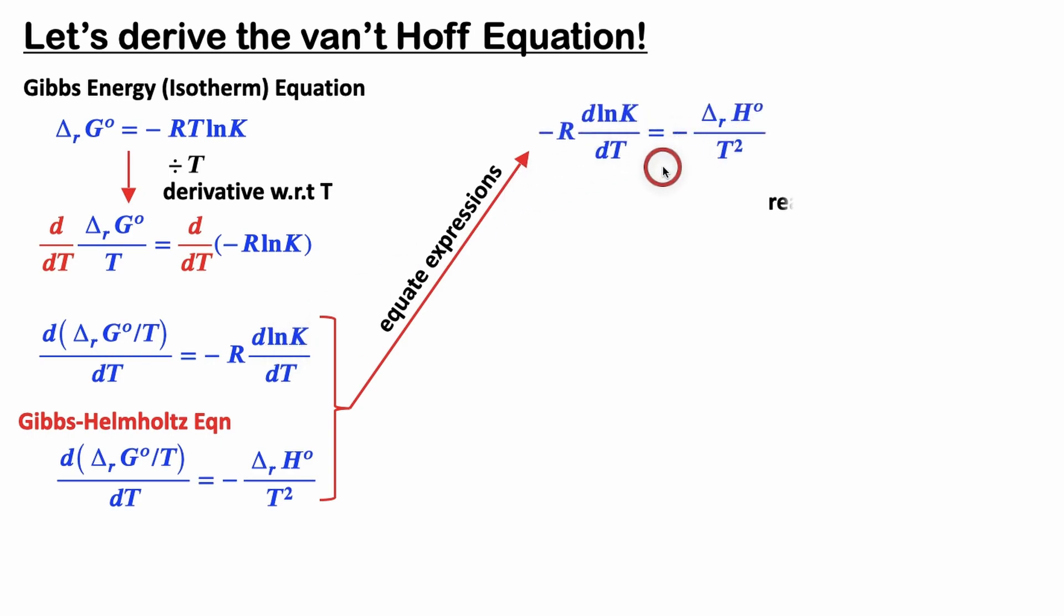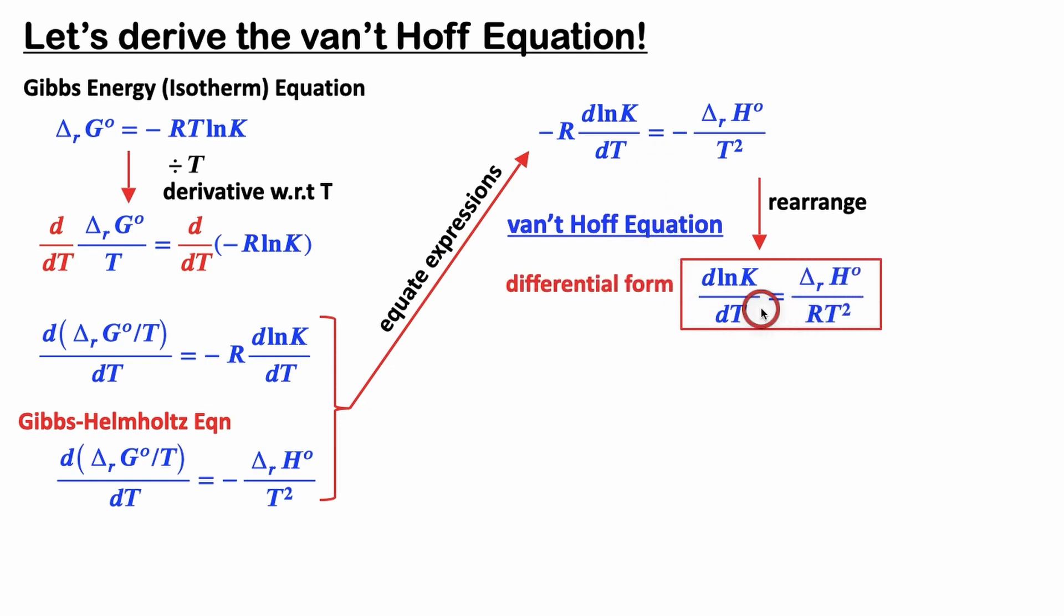So if we equate them and do some minor rearrangement we're left with the van't Hoff equation. This is it in its differential form, maybe not the most useful form for us for exams. So if we multiply both sides by dT and integrate with respect to T, I kind of left those details out here, we're left with the integrated form.